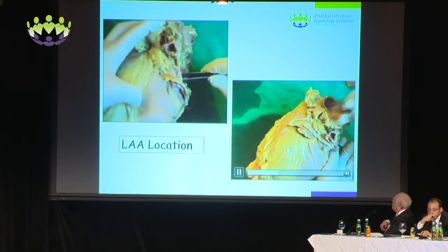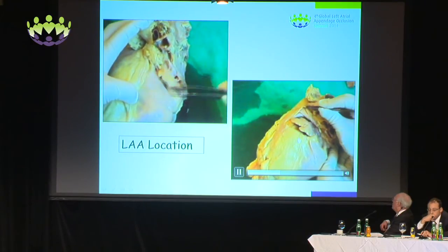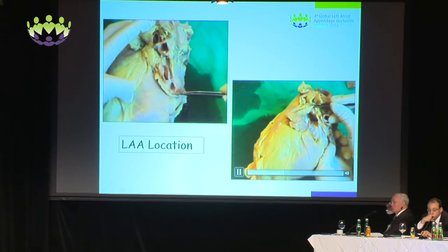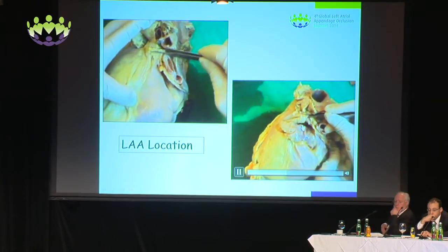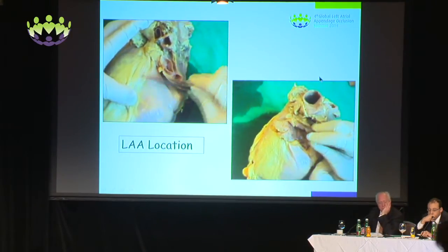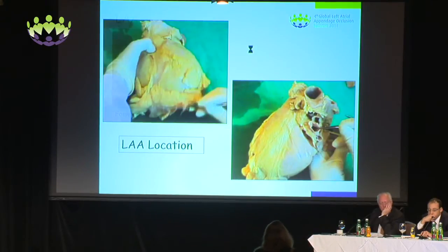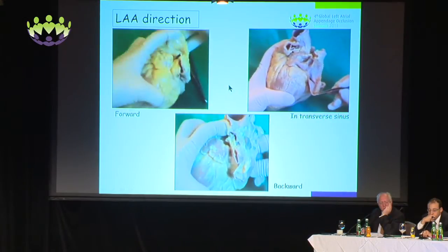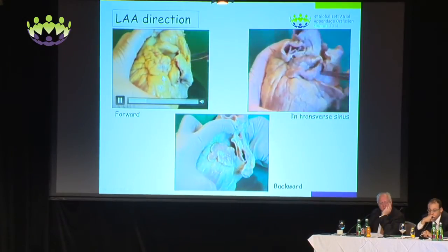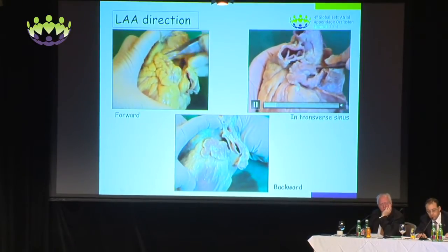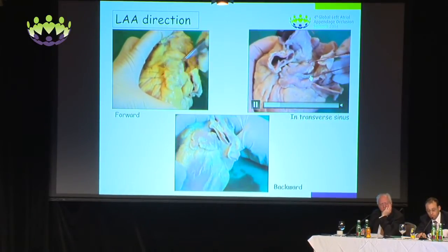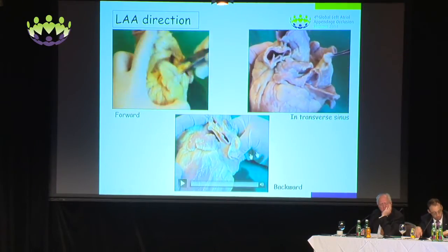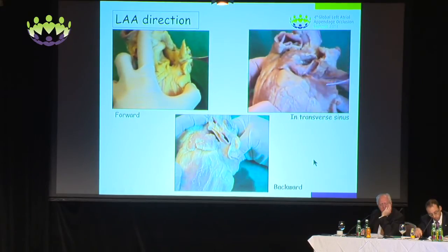Extending the cut further and pulling that fibrous pericardium further away, we can see this little gap behind here — the transverse pericardial sinus. In terms of the left atrial appendage direction, it takes all shapes and forms. We have a forward-pointing appendage, an appendage pointing into the transverse pericardial sinus, and an appendage which seems to be going a little bit backwards instead.